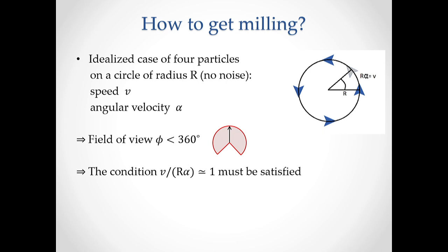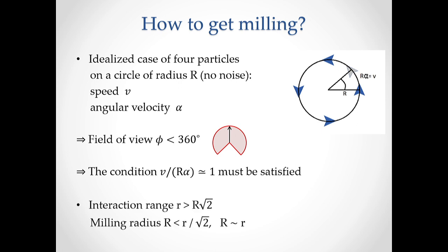On top of that, we know that the condition for circular motion has to be satisfied — which is just the definition of any circular motion. This means the speed has to be not too large compared to the angular velocity, a bit like a satellite around the earth: if it's too fast it simply flies away, and if it's too slow it crashes into the earth. We also notice that the interaction range in this case is the radius times the square root of two, so the radius is of the order of magnitude of the interaction range, which is what we will observe in the milling.